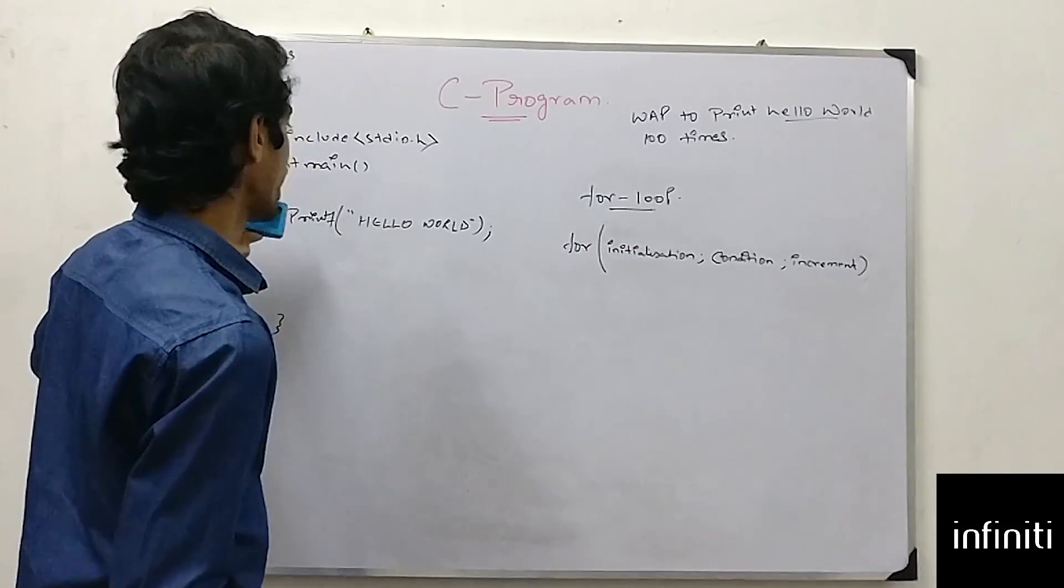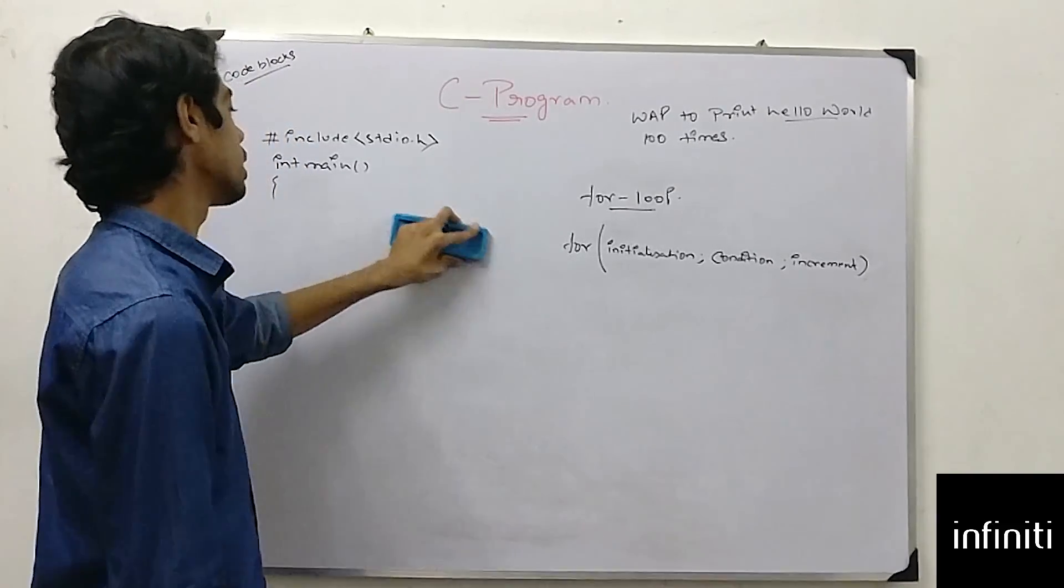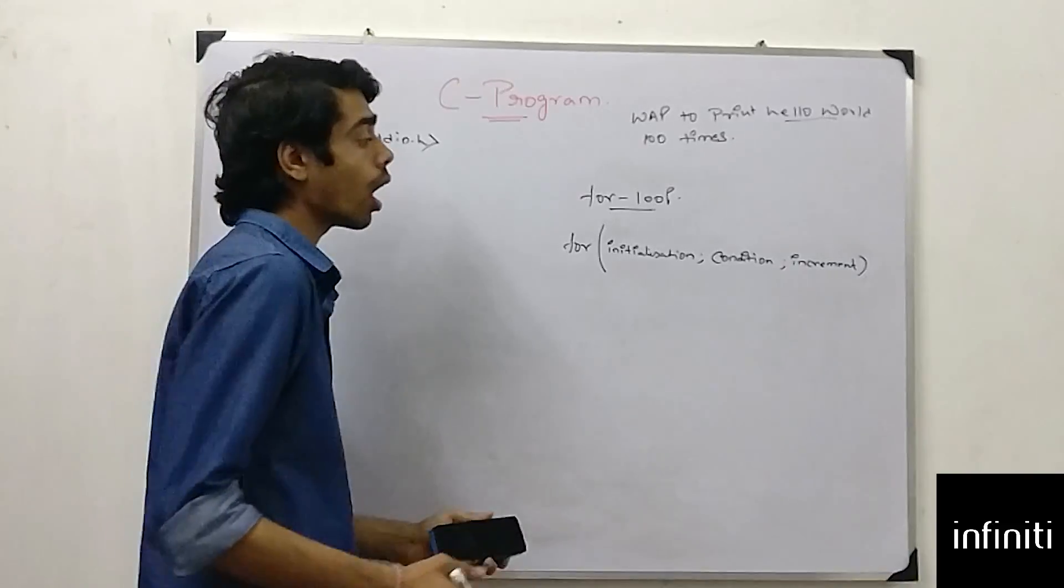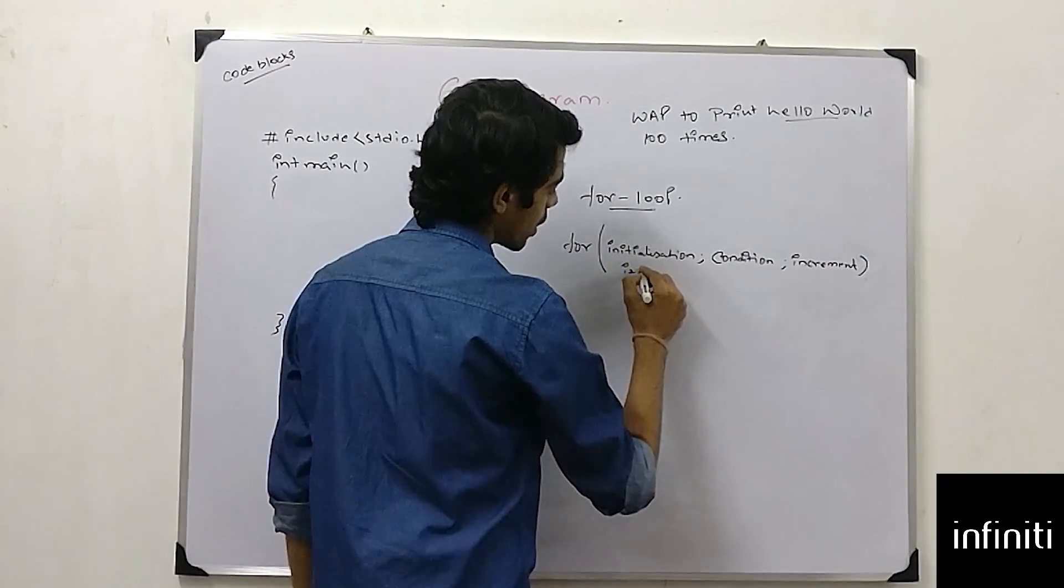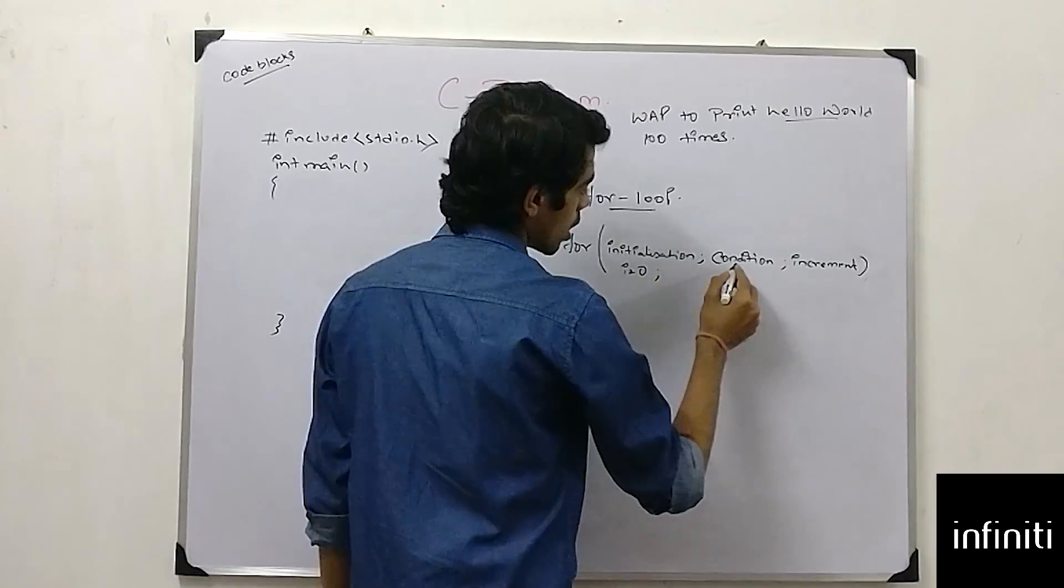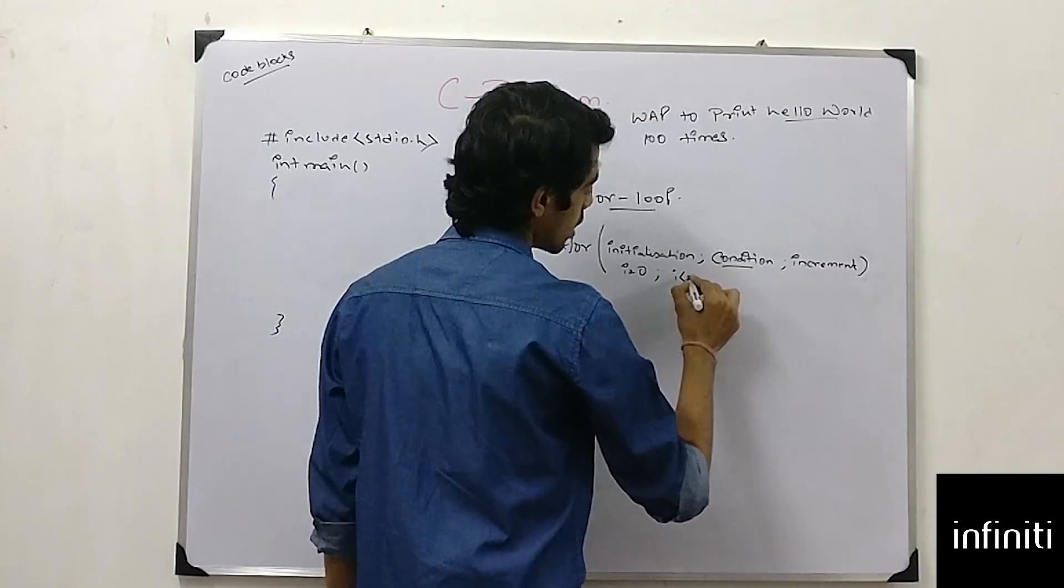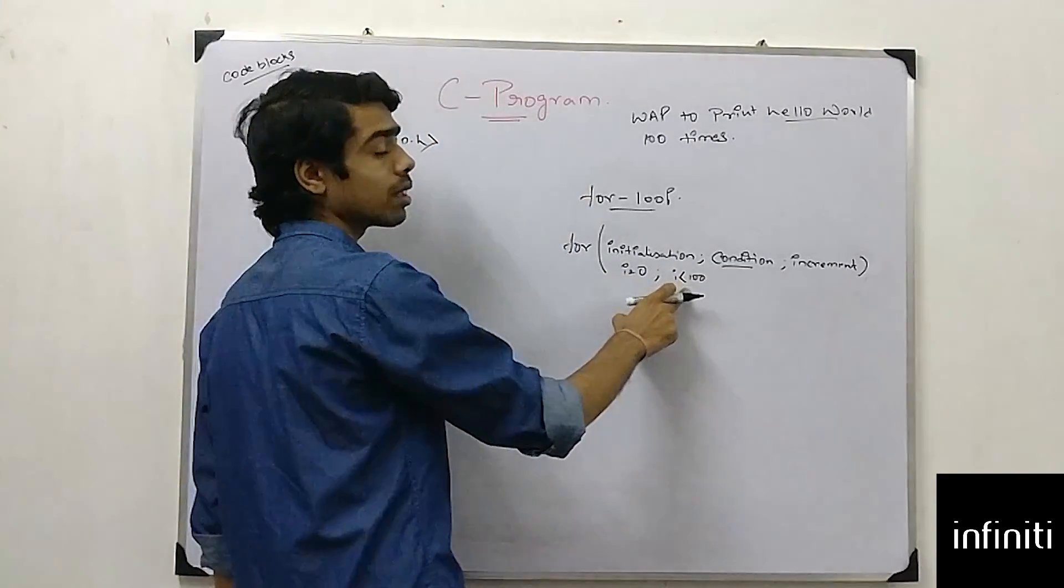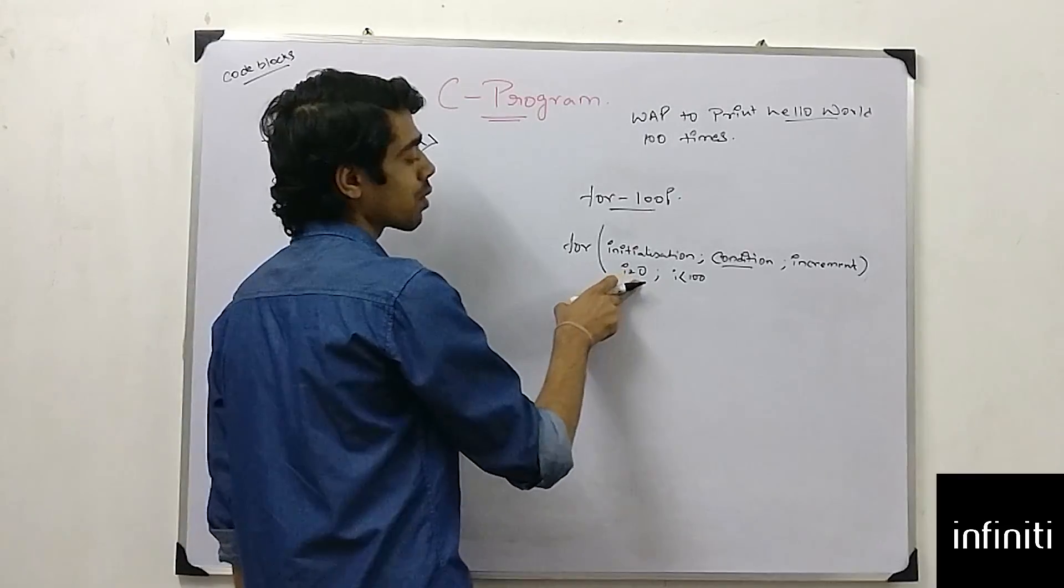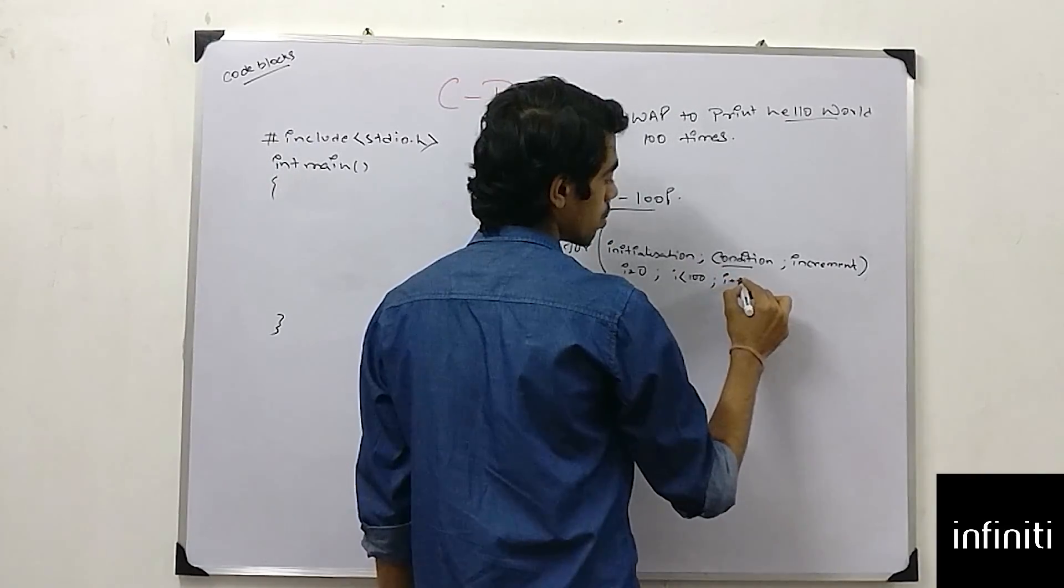So if I want to write hello world hundred times, I should program my for loop something like it should print hello world hundred times. So what should I do? I initialize this thing with zero. The condition will be i should be less than hundred. As I'm starting from zero, it should be less than hundred. And if I start from one, it should be less than equal to hundred. i plus one.